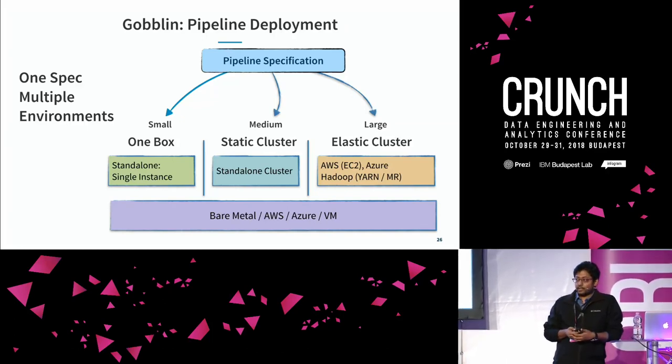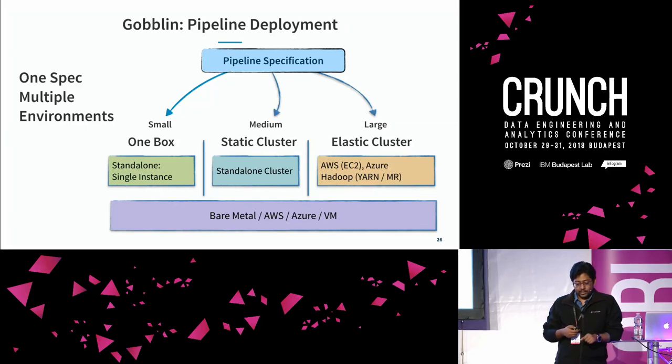Once you start to scale up, you can run the same specification on a Goblin cluster with a master and workers. If you're super successful or at a scale like LinkedIn, you can run your workload on an elastic cluster like AWS, Azure, or YARN. Or if you have mostly batch use cases where you don't care about SLAs, you can also run Goblin as an MR application using the same specification. The underlying infrastructure can be bare metal, AWS, Azure, or VM — Goblin doesn't care about that.